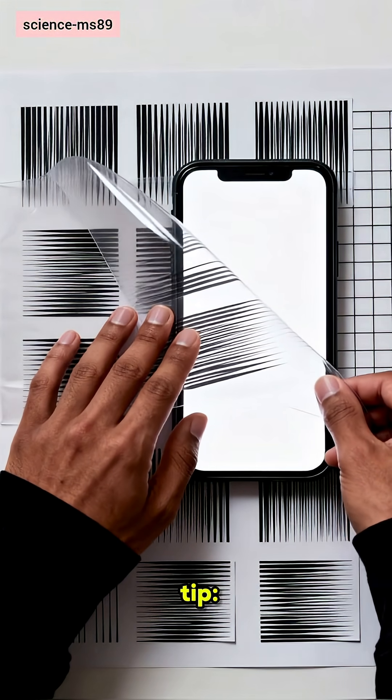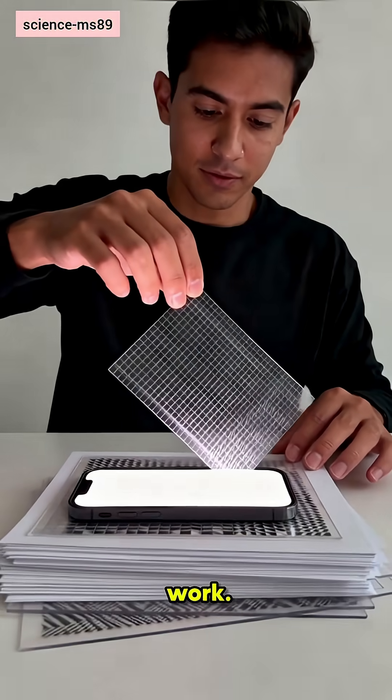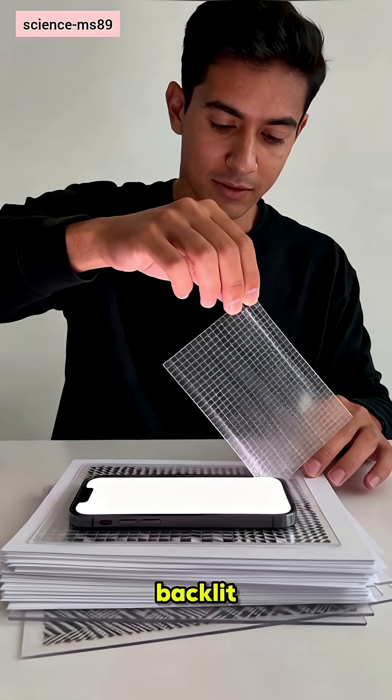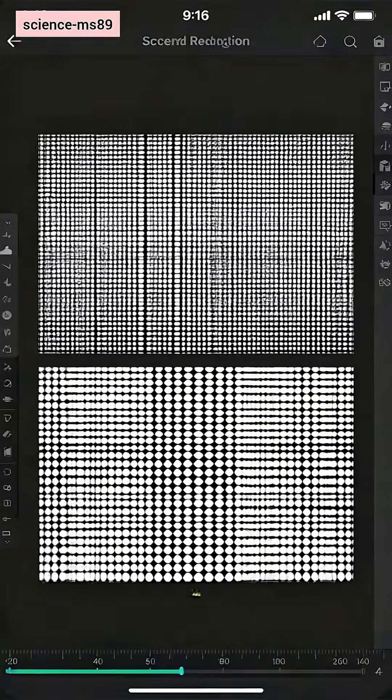DIY tip: transparent sheets or paper cutouts work. Your phone light makes a great backlit stage.